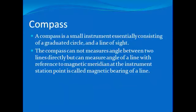A compass is a small instrument which consists essentially of a magnetic needle, a graduated circle, and the line of sight. When the line of sight is directed towards a line, the magnetic needle points towards magnetic meridian and the angle which the line makes with the magnetic meridian is read at the graduated circle.